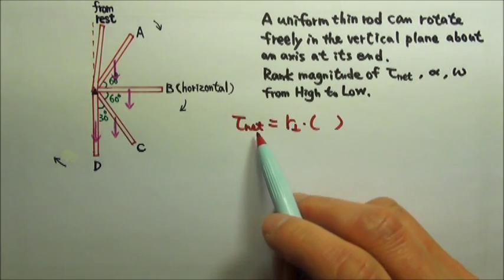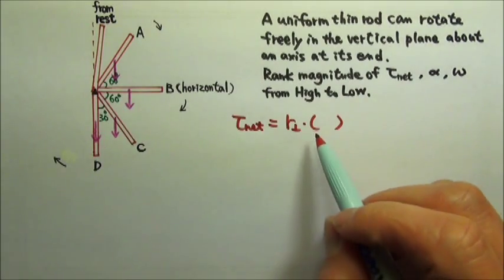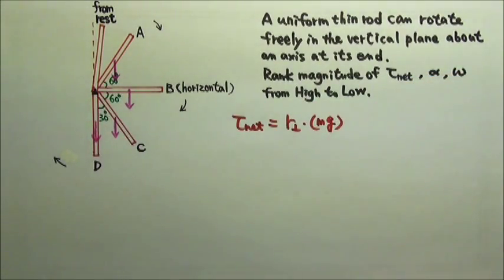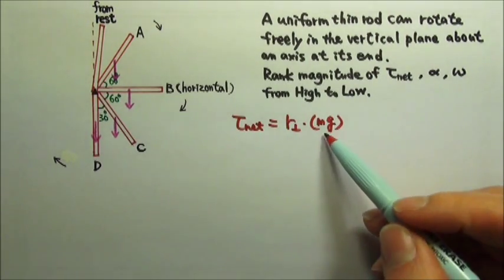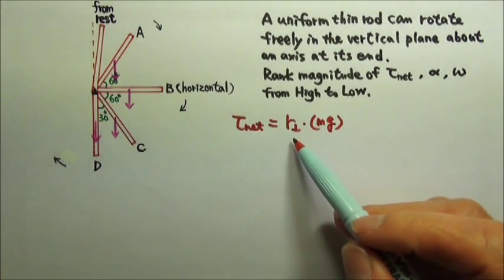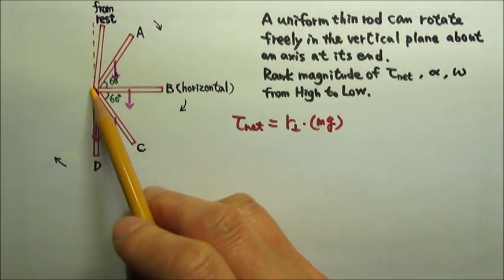We need the net torque, and the net torque equals the lever arm times the force, and right now it's Mg that's producing the net torque. Since Mg is the same for all positions, we just need to compare the lever arm. The lever arm is the distance between the line of force and the axis.